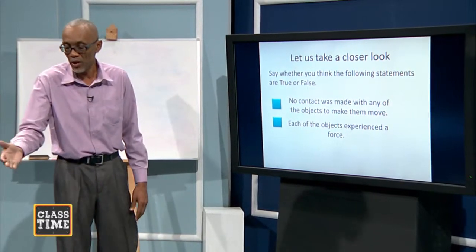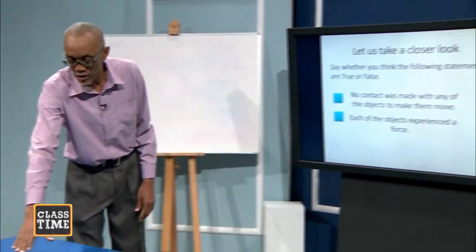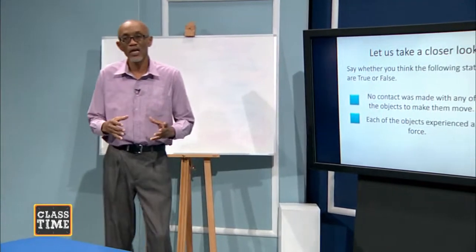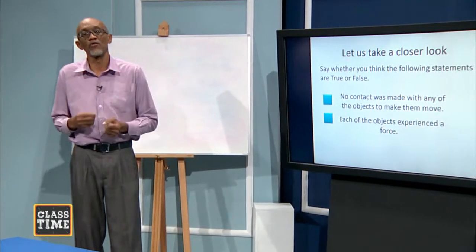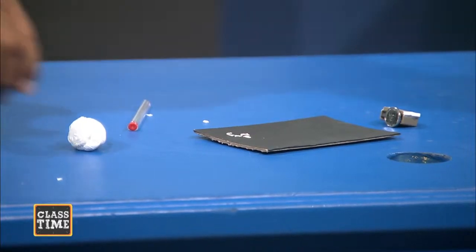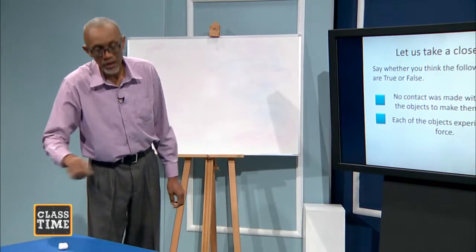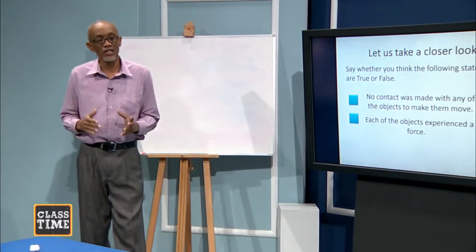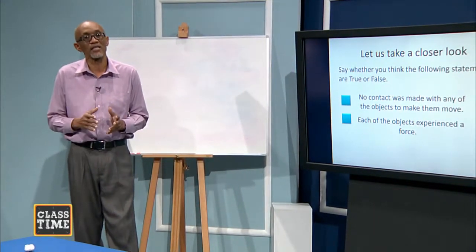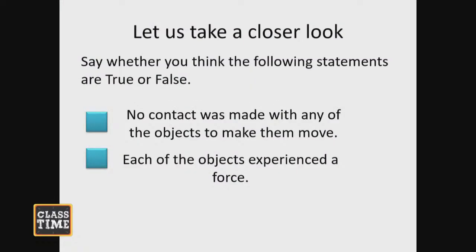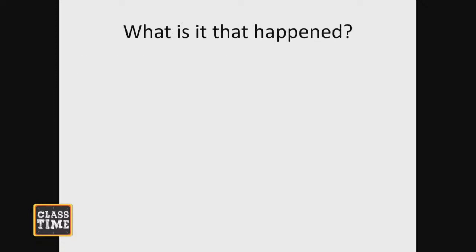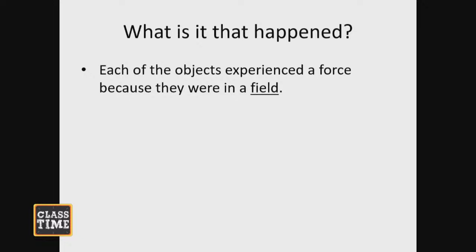The same thing with the bits of paper — they were on the surface of the card, and when we put the charged pen over it, they experienced a force and they went up to the pen. Also, this ball of tissue was stationary, and when I released it, it fell towards the table. If it accelerates, there must be a force acting on these objects. So the question is, where did these forces come from?